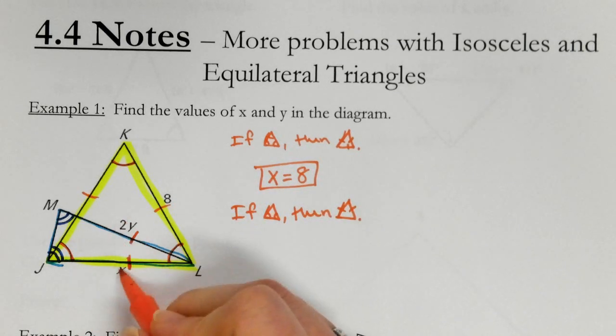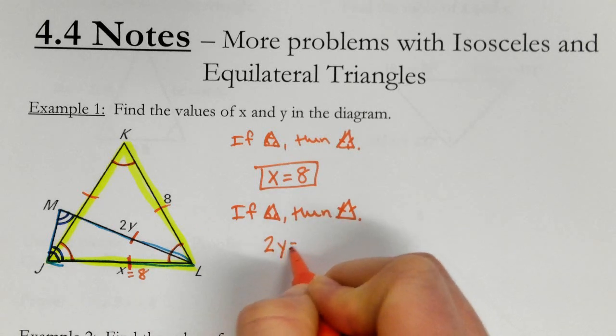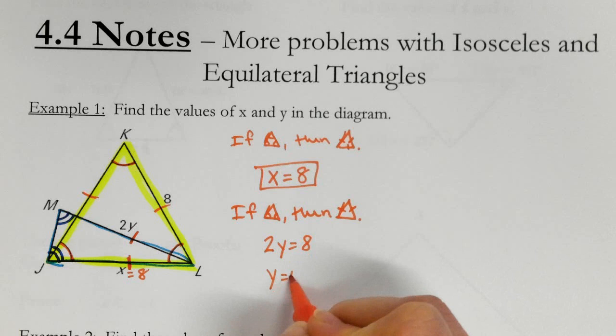Well, that means that those two are the same. Well, I just found out that x was 8. So I can say that 2y is also 8. So y is going to be 4.